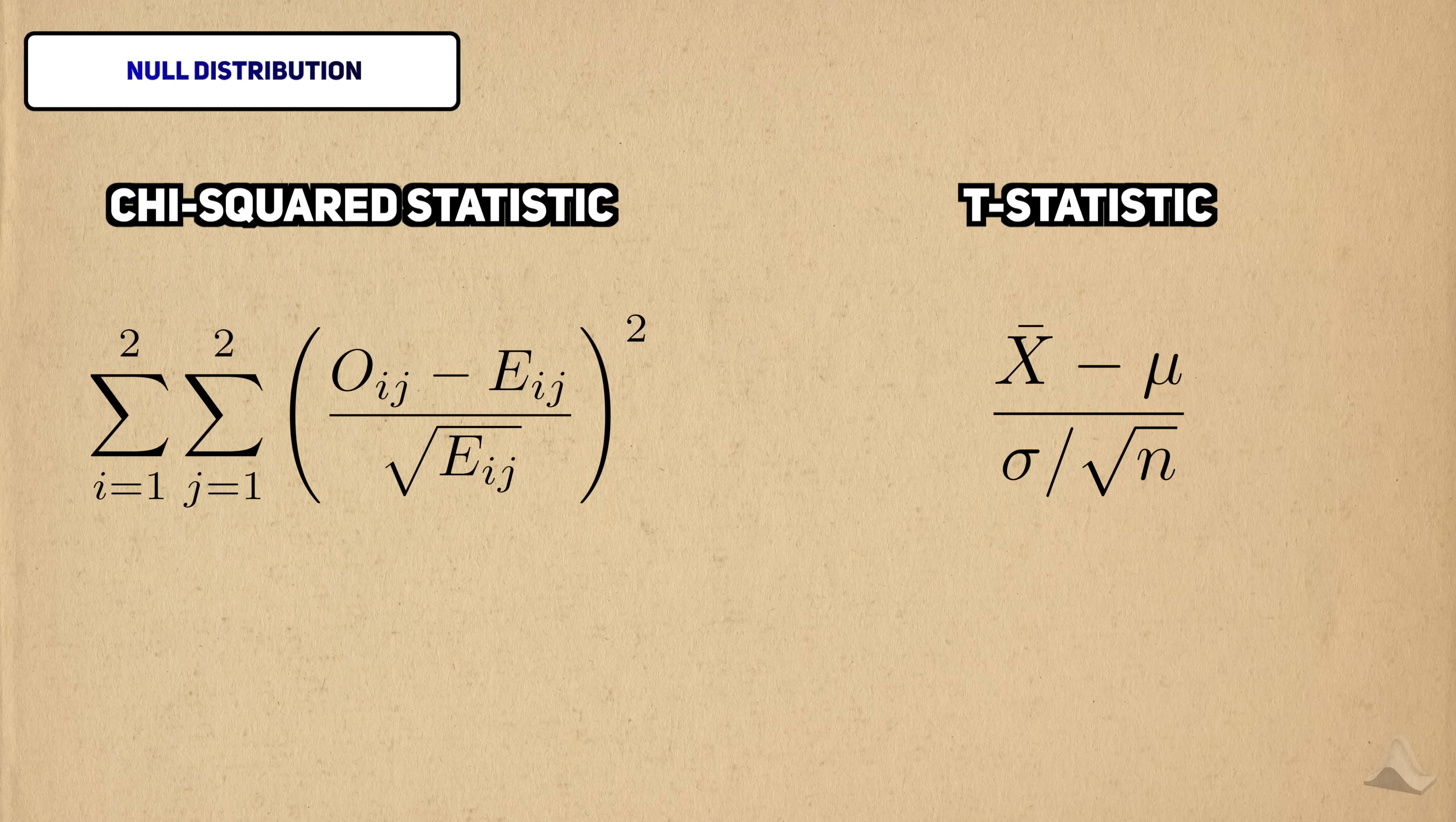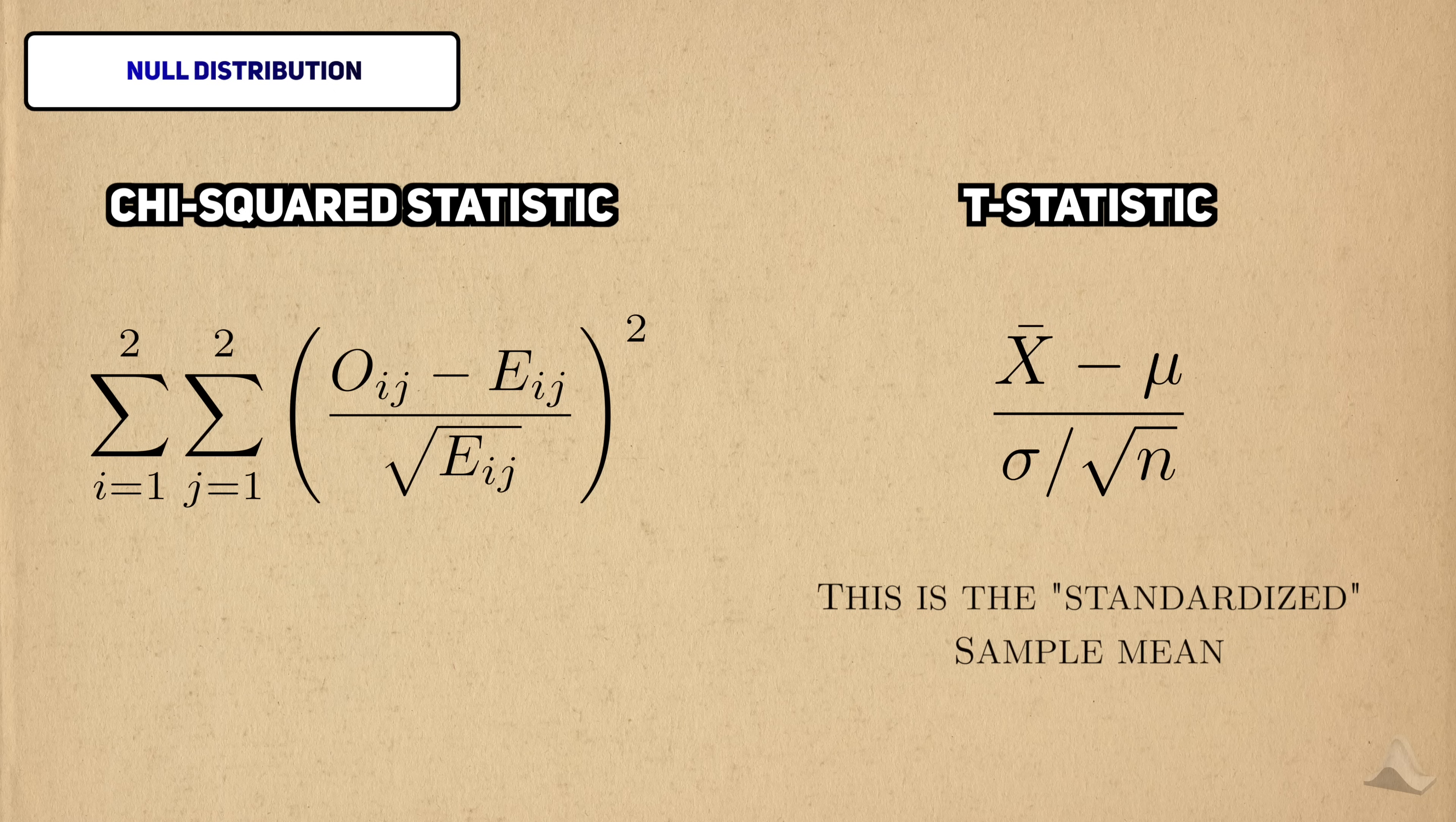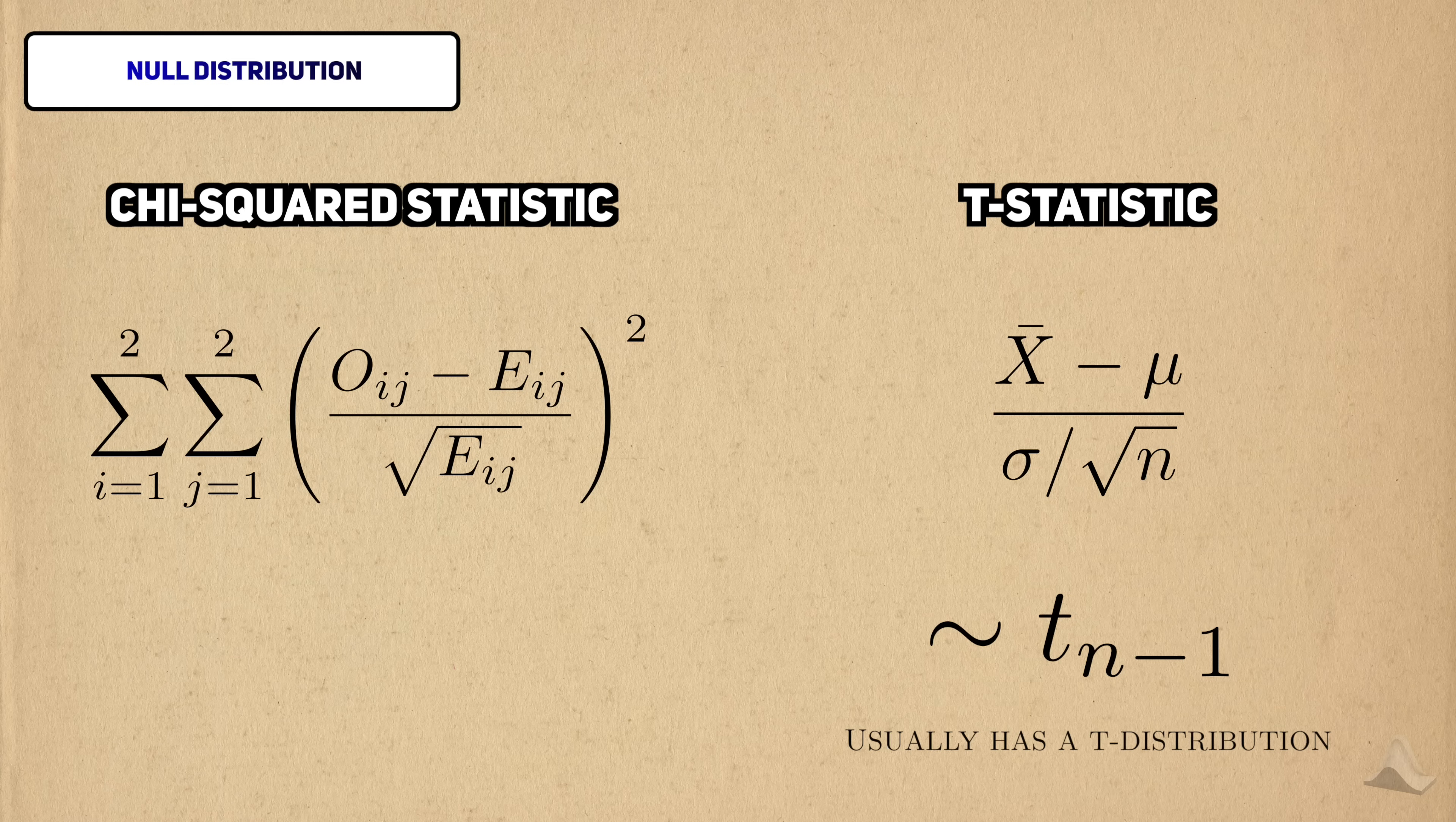For comparison, here's the test statistic for the one-sample t-test. When I was teaching the one-sample t-test, I showed you that the t statistic standardizes the sample mean. When we have to estimate the variance, this standardized mean has a t-distribution, but when it's known, we have a standard normal. This is a direct consequence of the central limit theorem.